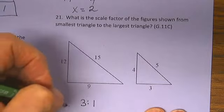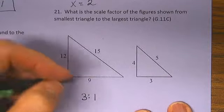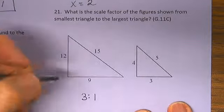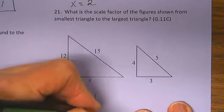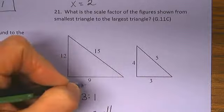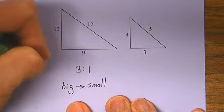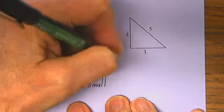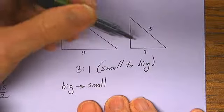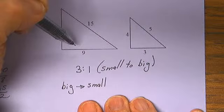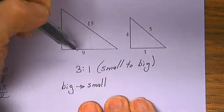We're multiplying times 3 from smallest to largest. However, if we're going from biggest to smallest, then we are dividing by 3. Small to big, 3. This dimension times 3 gives you this dimension.